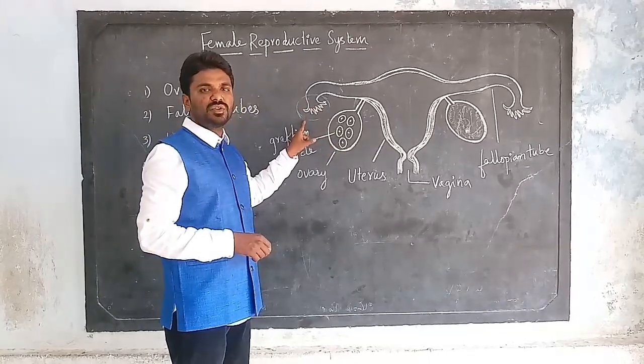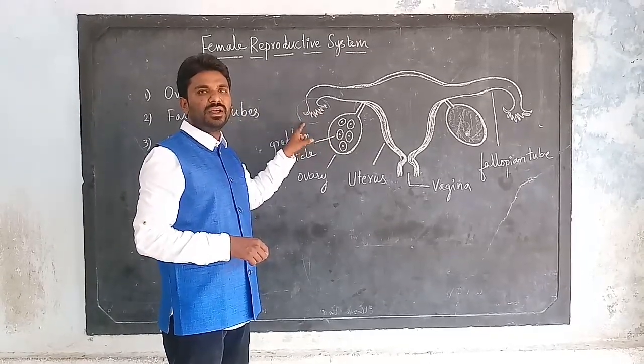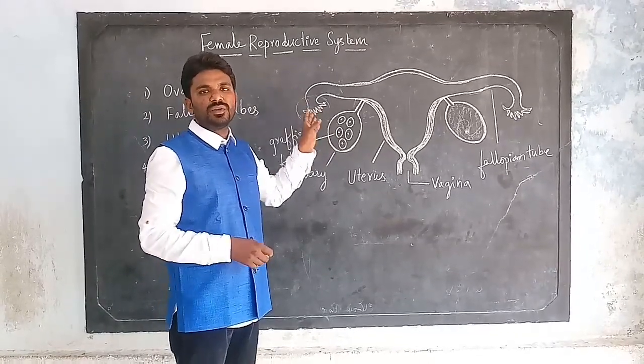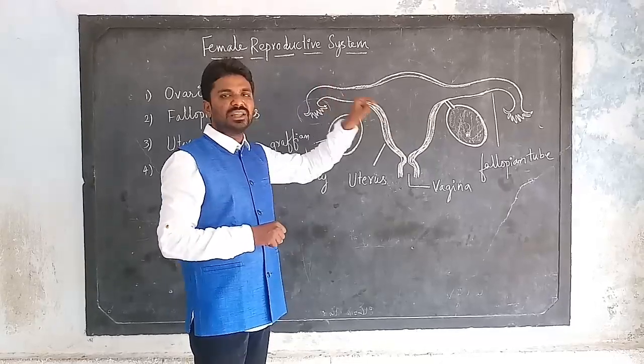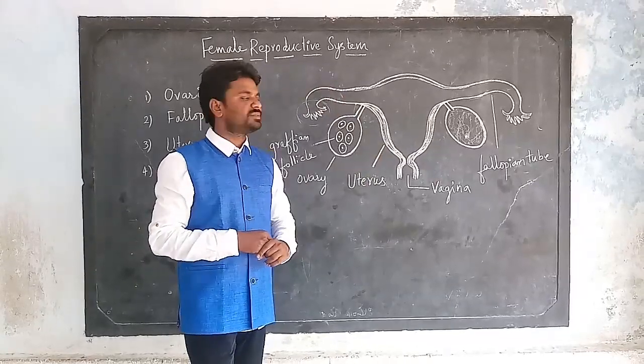When the ovum is released into the body cavity, the fallopian tubes receive the ovum and help in the fertilization process.